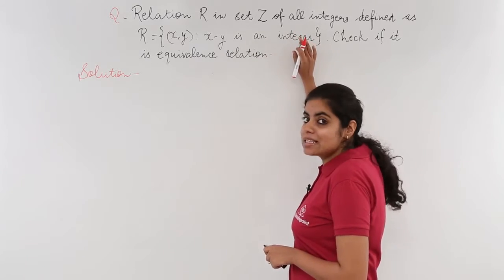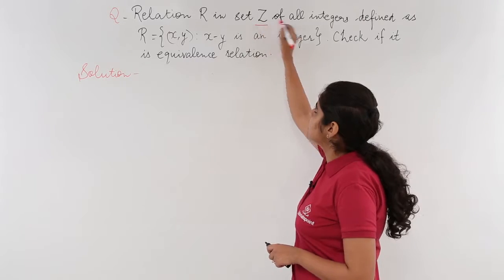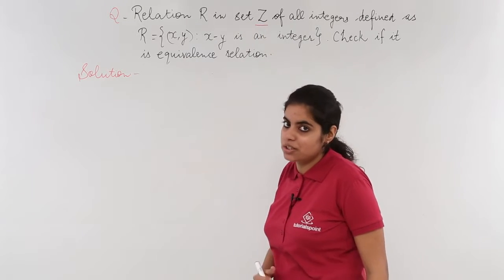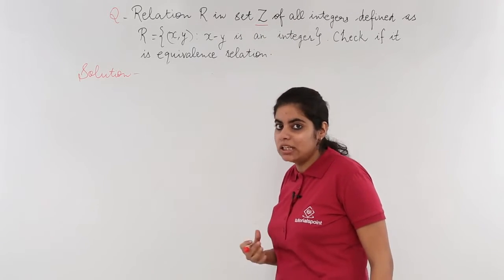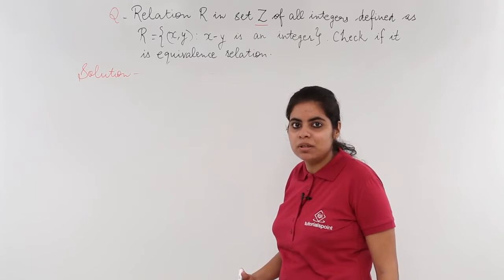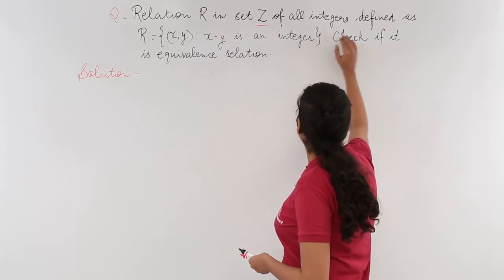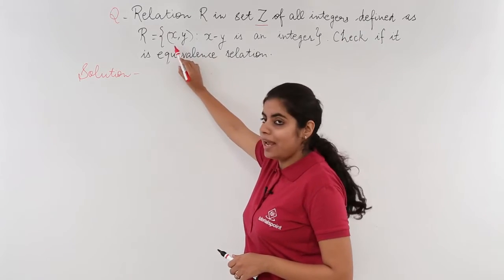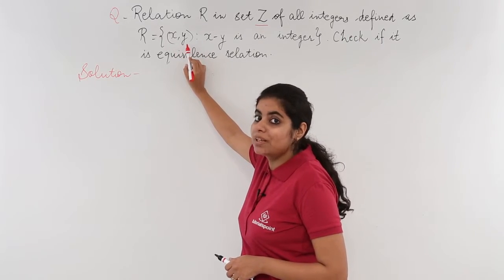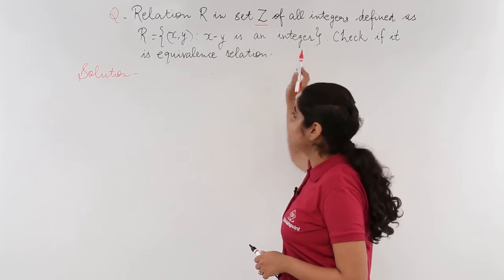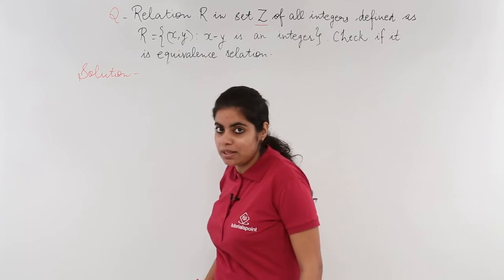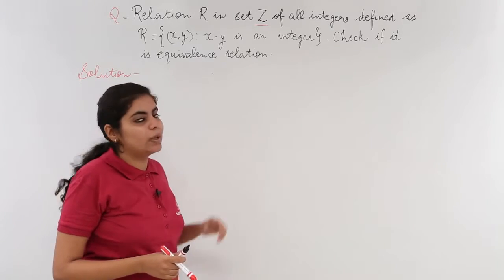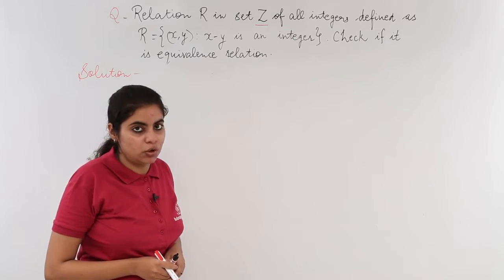Relation R in the set Z — the set of integers. Z means integers, like R means real numbers. Of all integers, the relation is defined on X and Y as an ordered pair where X minus Y is an integer. We have to check whether this is an equivalence relation or not.